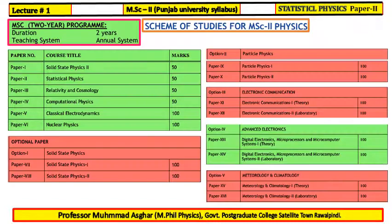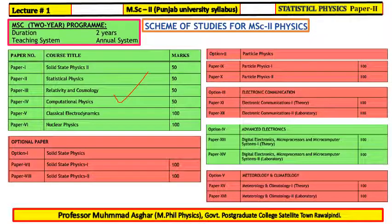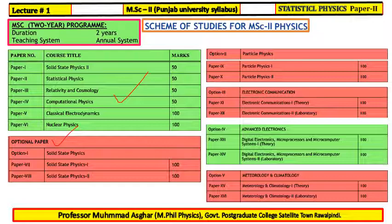In MSE Part 2 Physics, you have to study 6 compulsory courses which have 400 marks, and optional papers which have 200 marks. This means you have to study a total coursework of 600 marks.